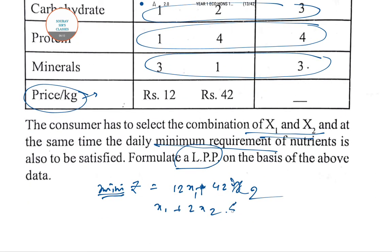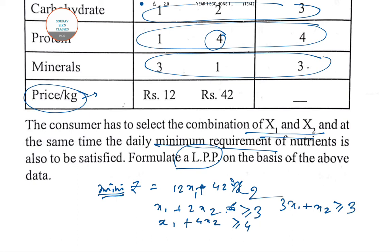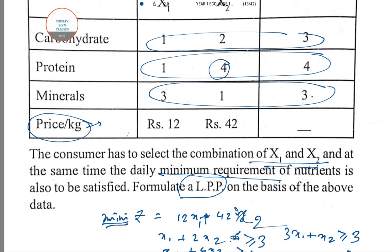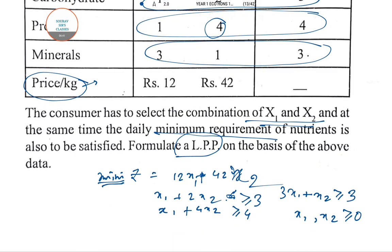The constraints are: X1 + 2·X2 ≥ 3 for carbohydrates; 4·X2 ≥ 4 for protein; and 3·X1 + X2 ≥ 3 for minerals. Together with X1, X2 ≥ 0, these form the complete linear programming problem formulation.